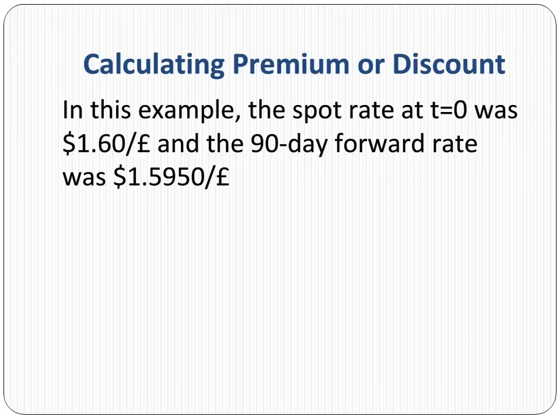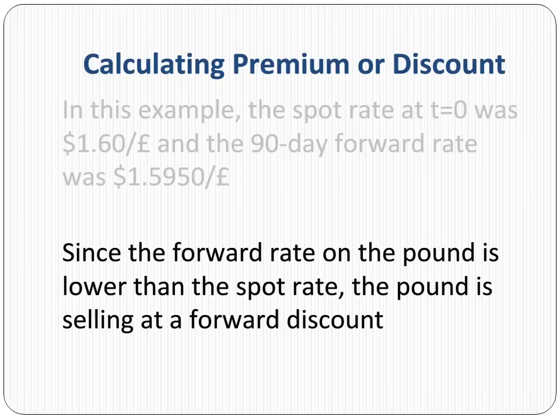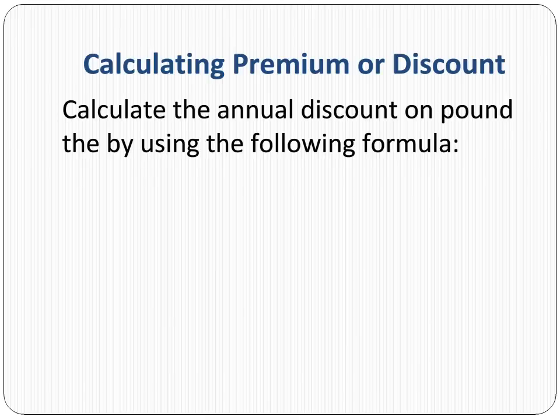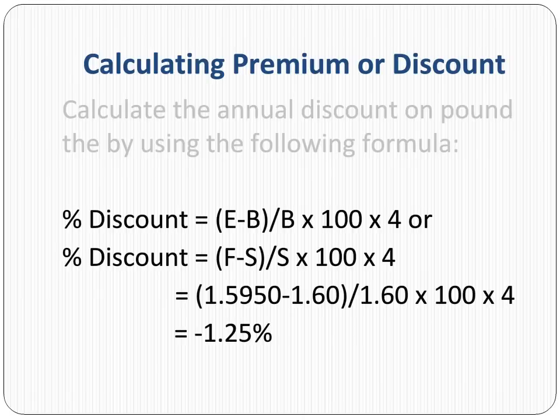Finally, let's look into calculations of forward rate premiums or discounts. In this example, the spot rate at T equals 0 was $1.60 per pound and the 90-day forward rate was $1.5950 per pound. Since the forward rate on the pound is lower than the spot rate, the pound is selling at a forward discount. We can calculate the annual discount on the pound using the following formula. Notice we are multiplying by 4 to convert the quarterly discount to the annual discount.